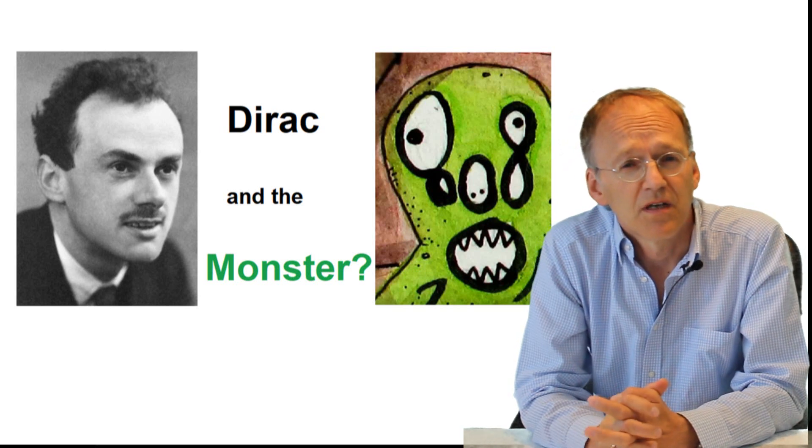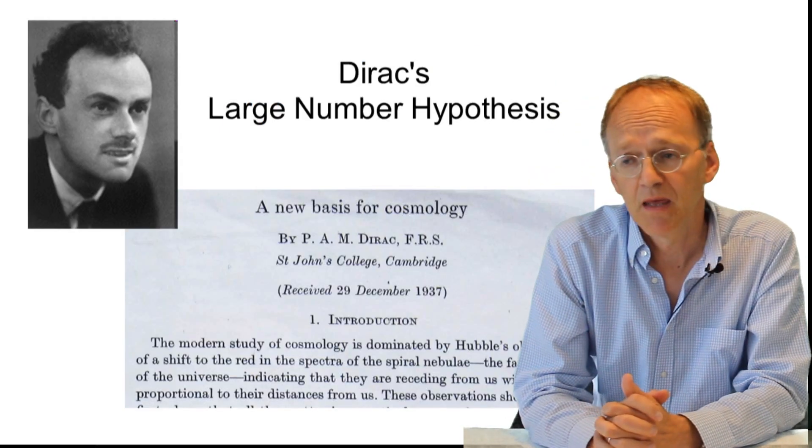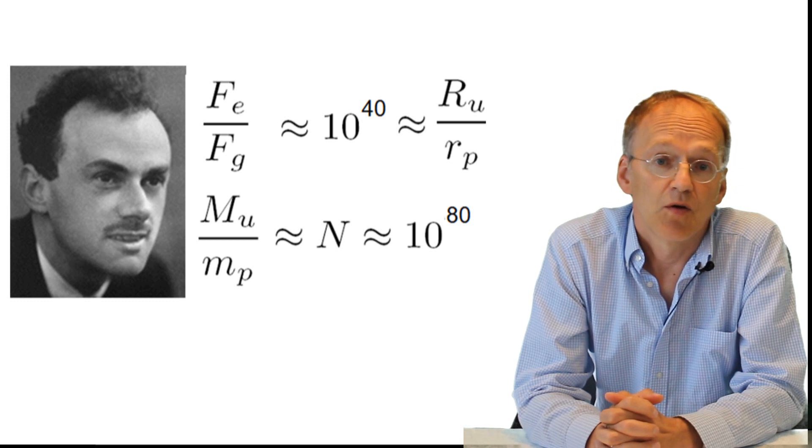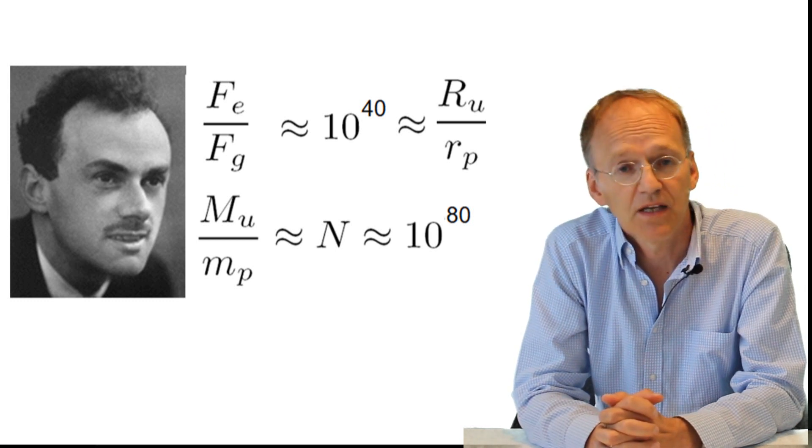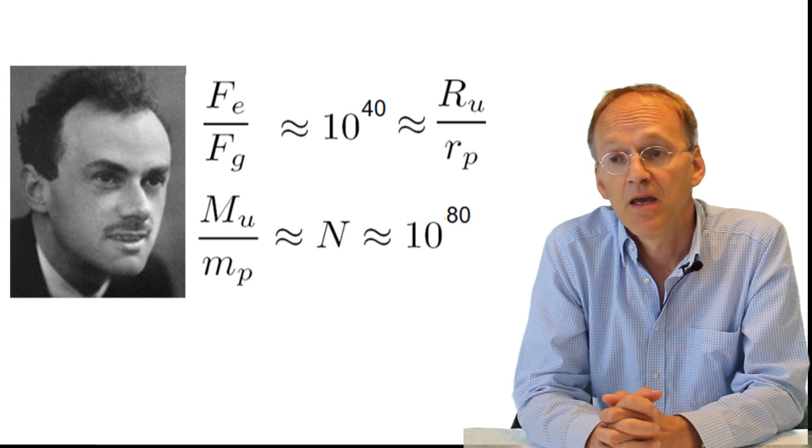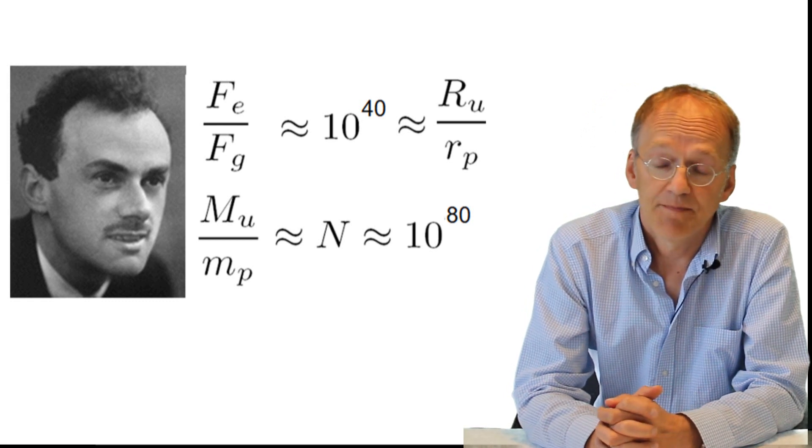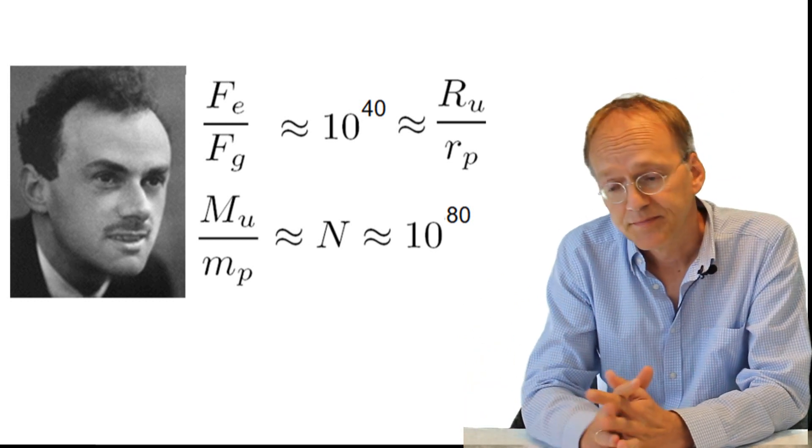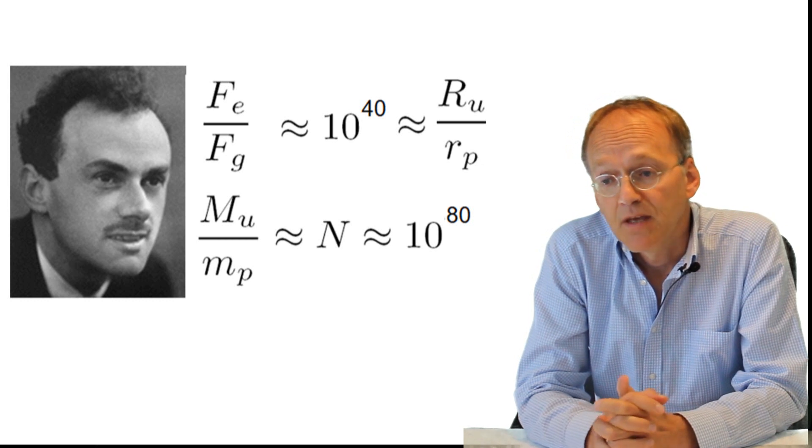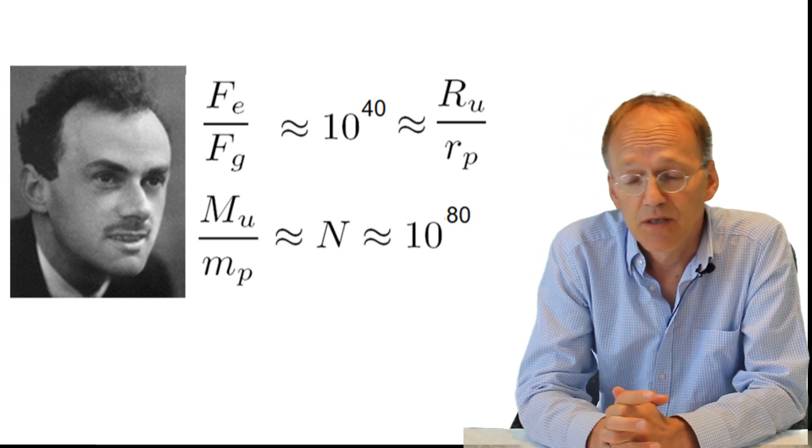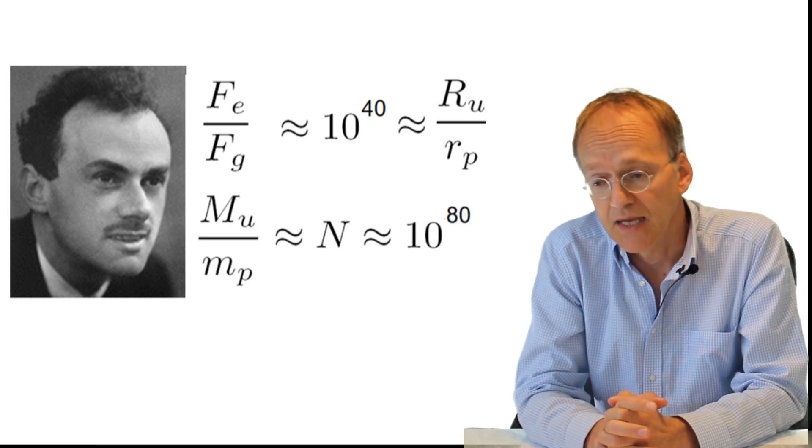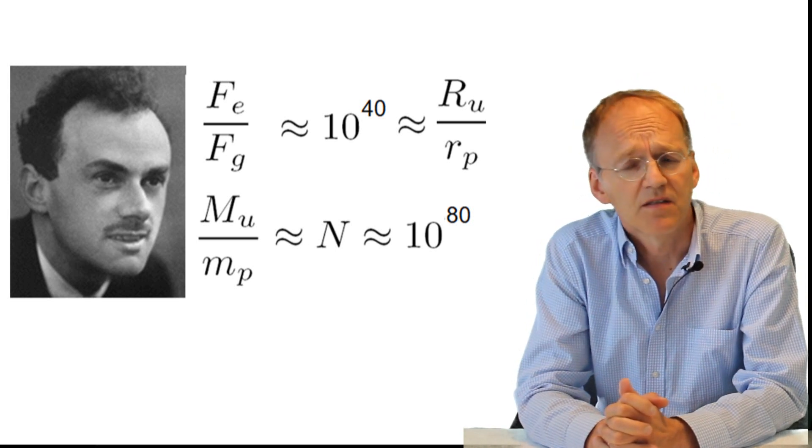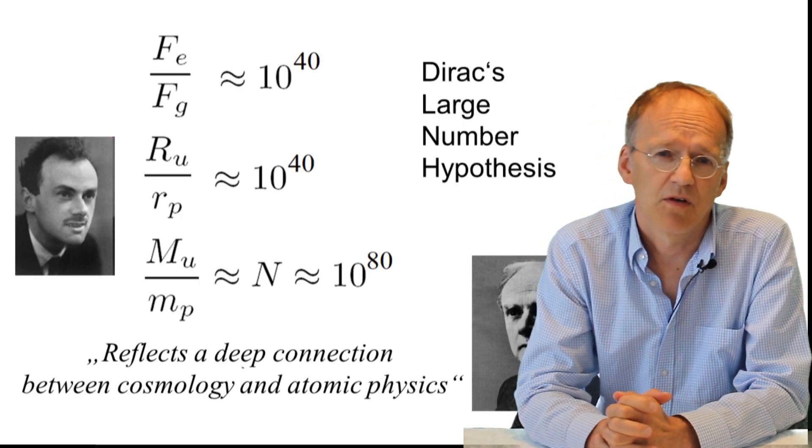In case you haven't heard about Dirac's large numbers, I recommend watching the video linked in the description. But to make you catch up: Dirac was wondering about numbers in physics and he noted that the ratio of the electric and the gravitational force in the hydrogen atom was a huge number, 10 to the power of 40, as is the ratio of the size of the universe to the size of the proton. Additionally, there are about 10 to the power of 80 particles in the universe, the square of the former number. And I agree with Dirac and I think there are good arguments in favor that this is not just a coincidence, but it reflects a deep connection between atomic physics and cosmology.